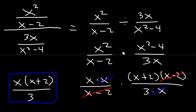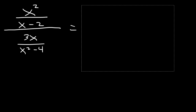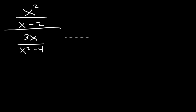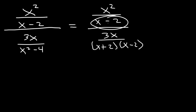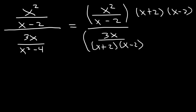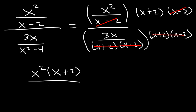Another way to do this is by factoring first. x² minus 4 is (x + 2)(x minus 2). Then multiply the top and the bottom by the common denominator, which is (x + 2)(x minus 2). These factors will cancel, leaving x² times (x + 2) on top and 3x on the bottom. After that we can cancel an x, giving us the same answer: x(x + 2) over 3.